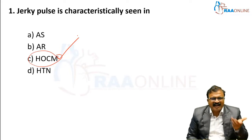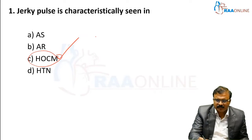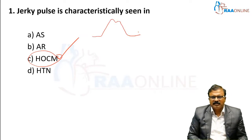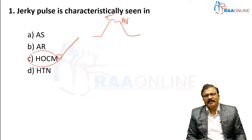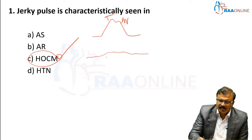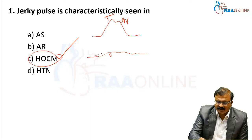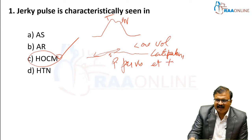To understand the pulse in other conditions, we should know the basics. Normal pulse has a tidal wave and a dicrotic notch. In aortic stenosis, the pulse is low volume and slow-peaking, late-peaking. This is otherwise called pulsus parvus et tardus.